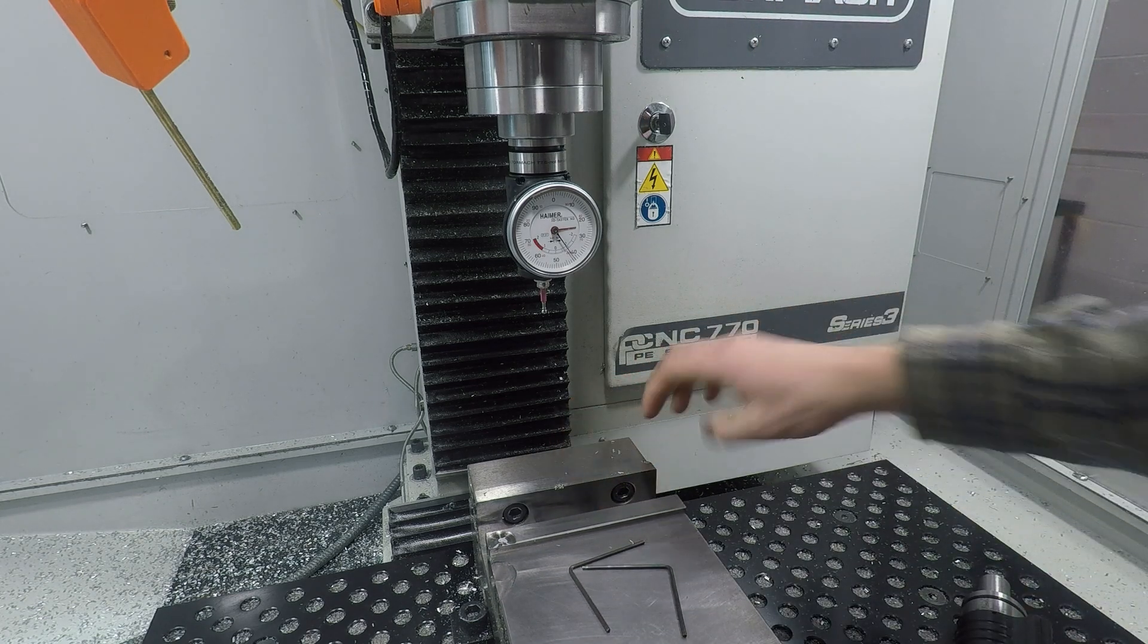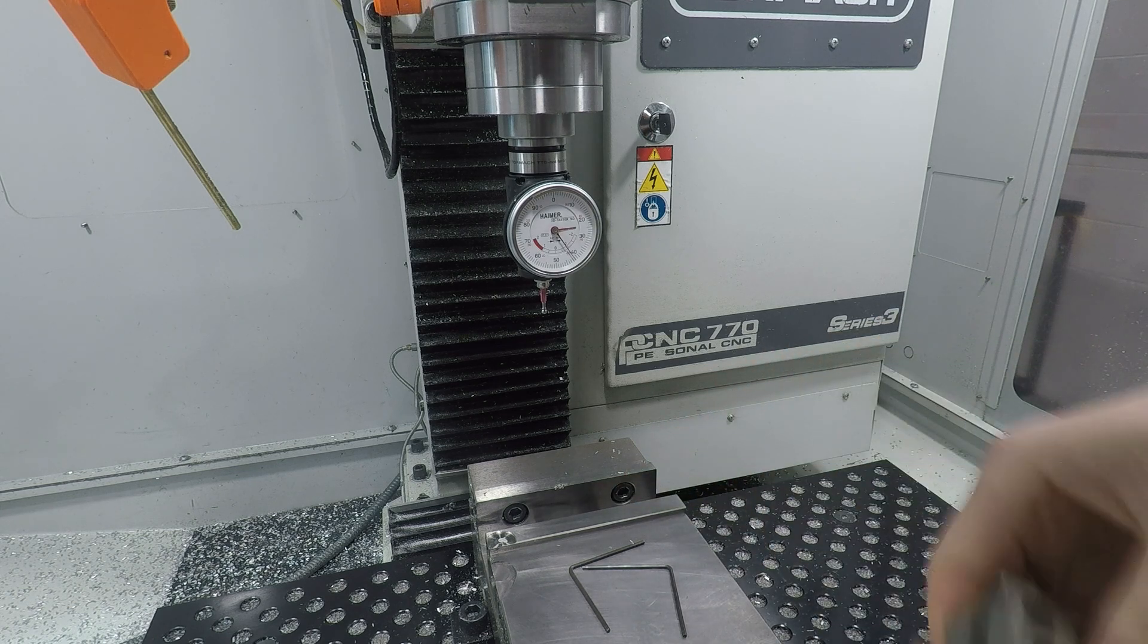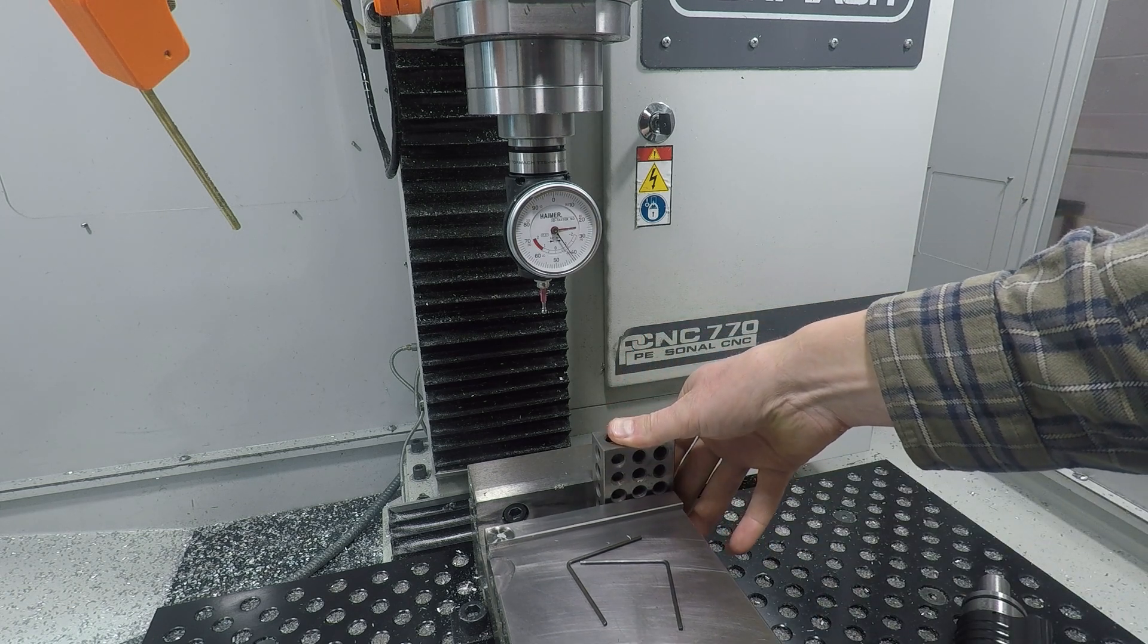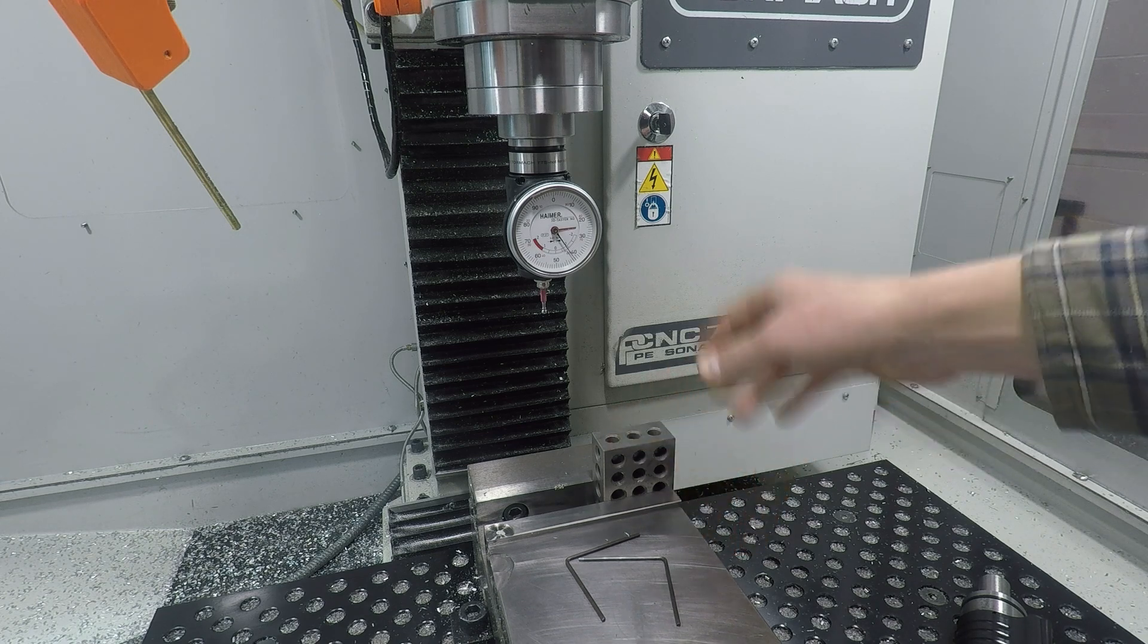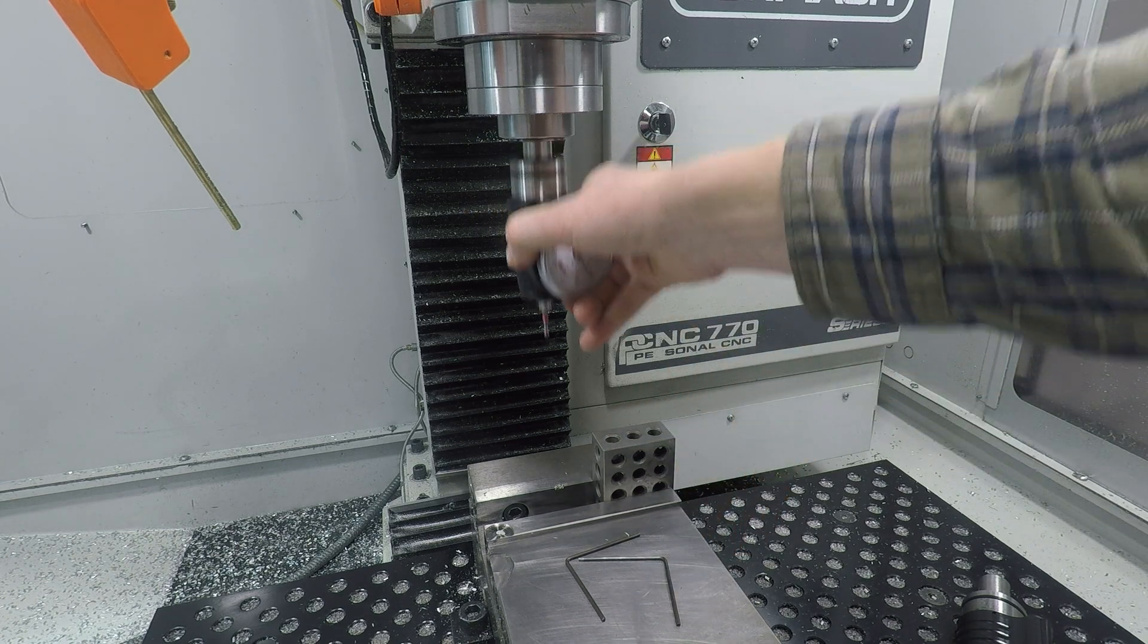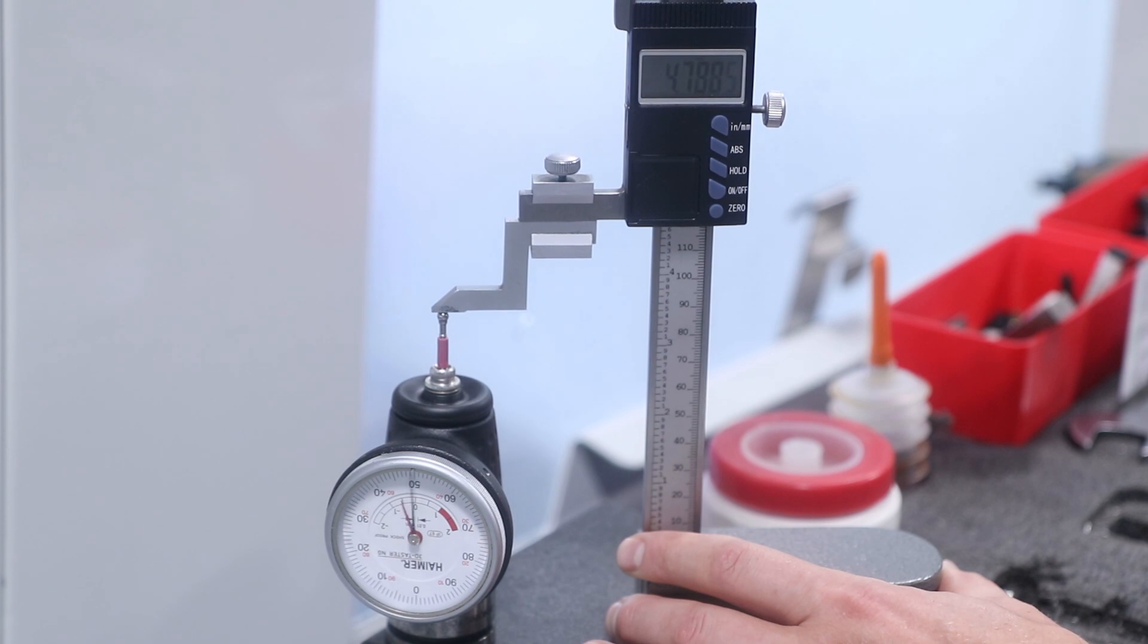If you are trying to hold some really tight tolerances, there's a number of other things you need to be aware of or think about, including checking the runout of your spindle and clocking the Haimer within the spindle so that you insert it at the same orientation each time.